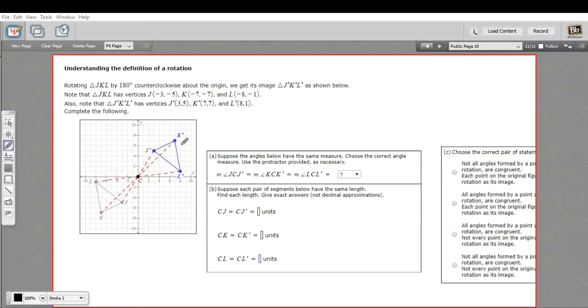In this problem, we have a diagram where a rotation has occurred. And so we have this original figure in gray, and it's gone through a rotation of 180 degrees about the origin.